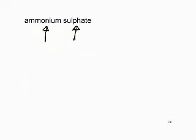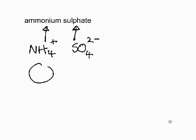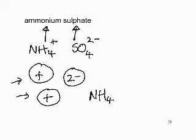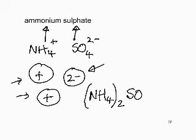The ammonium ion is NH₄⁺ (positive) and the sulfate ion is SO₄²⁻. We have a positive ion and a 2- ion. To balance, we need two ammonium ions. Since ammonium is a compound ion and we're taking more than one, we must use round brackets: (NH₄)₂SO₄. We took only one sulfate ion, so that must not be placed in brackets.